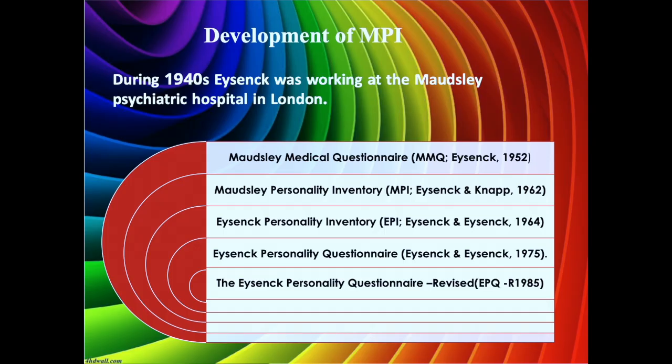Regarding the development of MPI: first and foremost, Eysenck developed the Maudsley Medical Questionnaire, published in 1952, which had only a neuroticism scale. Then in 1962, an extroversion scale was added to it and it became the Maudsley Personality Inventory. However, this personality inventory was leading to very socially desirable answers, so to overcome that problem, a lie scale was added.